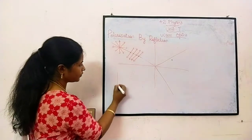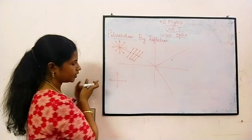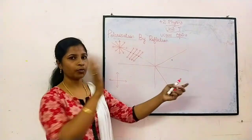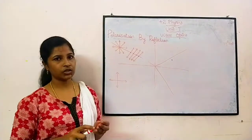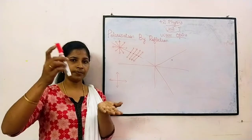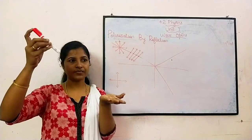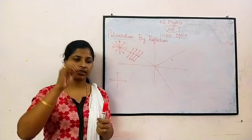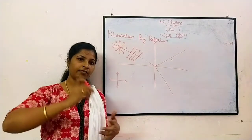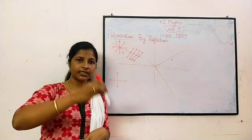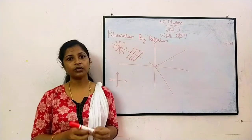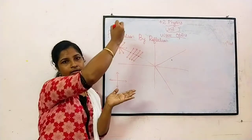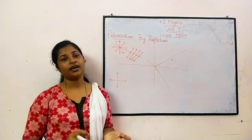Consider that light has components — the electric field can be in this direction, some will be in this direction and some will be in this direction, but the direction of propagation is the same. Just imagine when the light is coming, suppose this is the material — if it is coming like this and hits the surface, it will come like this and jump out like this. That is called reflection.